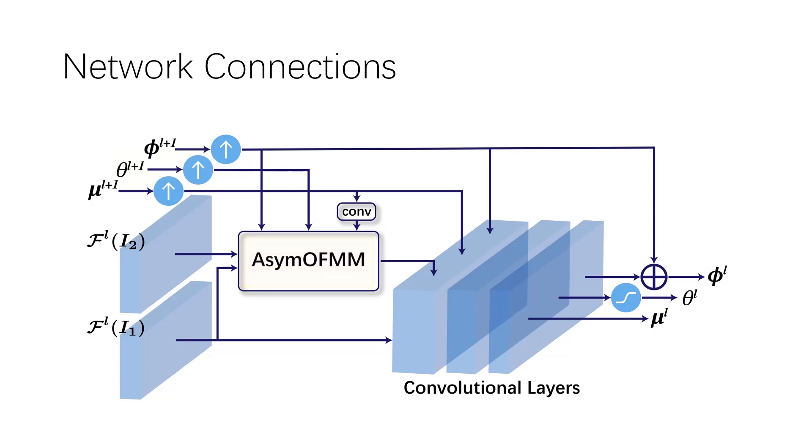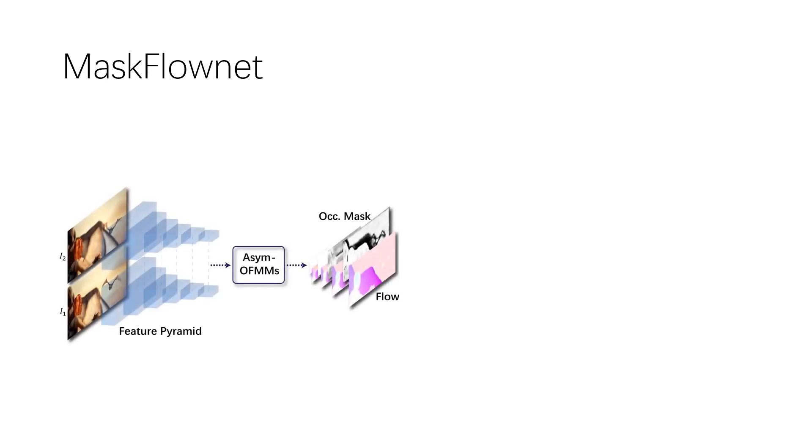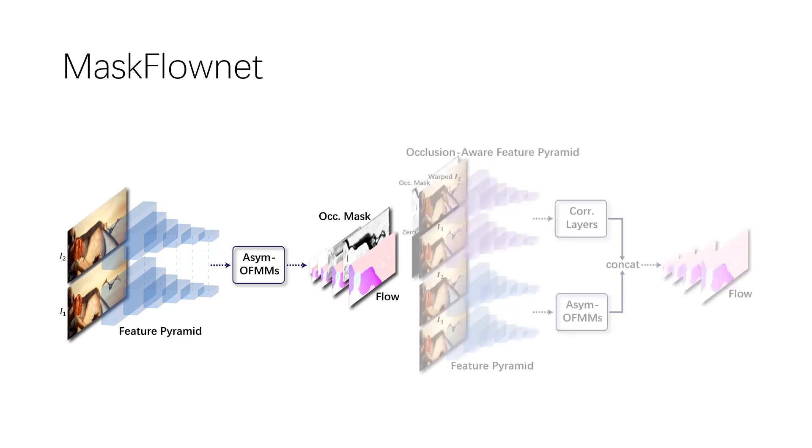We demonstrate how the proposed asymmetric occlusion-aware feature matching module contributes to the overall performance using a two-stage architecture, MaskFlowNet. The first stage, named MaskFlowNet-S, generally inherits the network architecture from PwCNet but replaces the plain feature matching modules with the proposed asymmetric occlusion-aware feature matching modules.